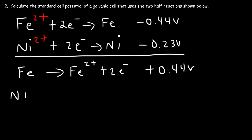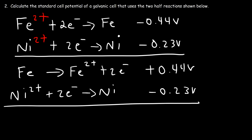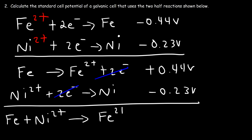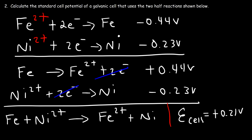The second reaction we rewrite exactly the way it was, so the cell potential will not change. Adding the two half reactions, the electrons cancel, giving us iron metal reacting with the nickel²⁺ cation to produce the iron²⁺ cation and nickel metal. The cell potential is 0.44 plus negative 0.23, giving a cell potential of positive 0.21 volts for this galvanic cell.